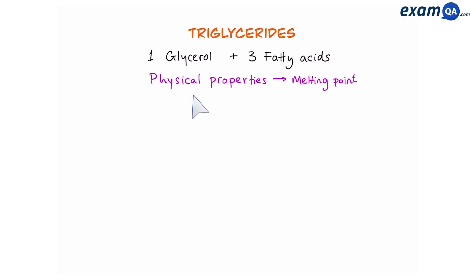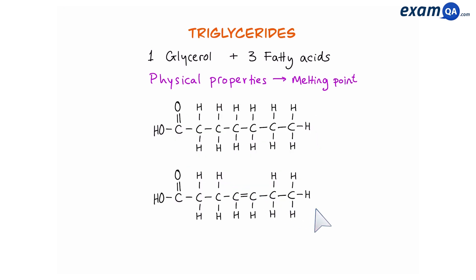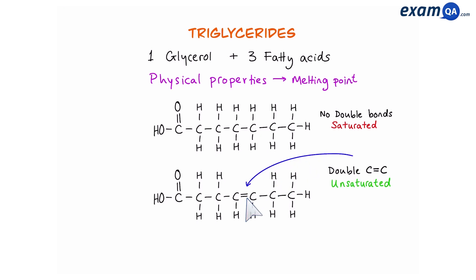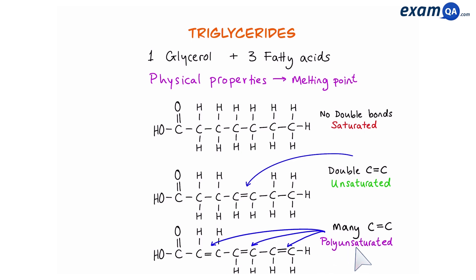Let's move on to the physical properties, in particular the melting point of triglycerides. The main differences in physical property are due to the hydrocarbon chain. Here we have two different fatty acids. The first one has no double bonds in the hydrocarbon chain, so we say it is saturated. The second one has a carbon-to-carbon double bond, so this one is unsaturated. The third one has many carbon-to-carbon double bonds — this is referred to as polyunsaturated, with 'poly' referring to many double bonds. If it has one double bond, we call it monounsaturated.